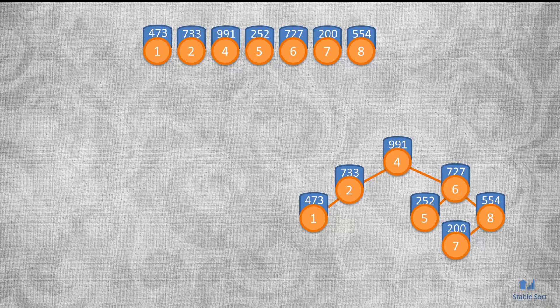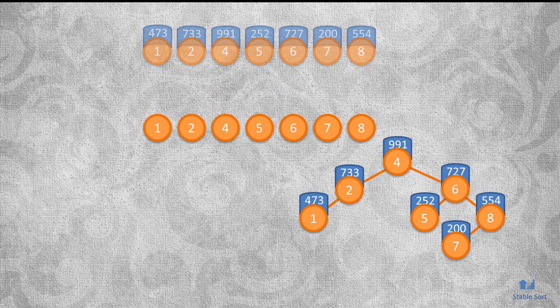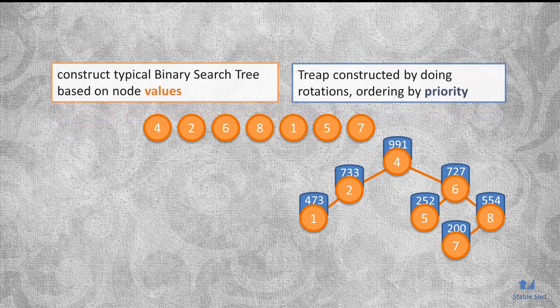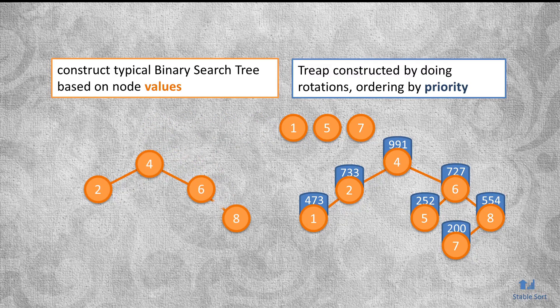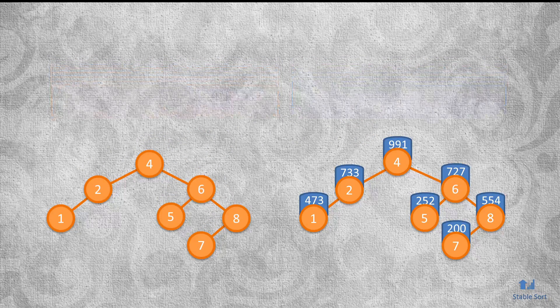But what guarantees that this results in a balanced tree? Since the priorities are assigned randomly, the number of rotations done would also be random, so each node is moved up or down by some random amount. This is equivalent to having all of the nodes at the outset, shuffling them, and then constructing a regular binary tree in that randomized order. The construction would follow the typical rule of going left if we need a smaller value or right if we need a larger one. In fact, both approaches would result in exactly the same tree.